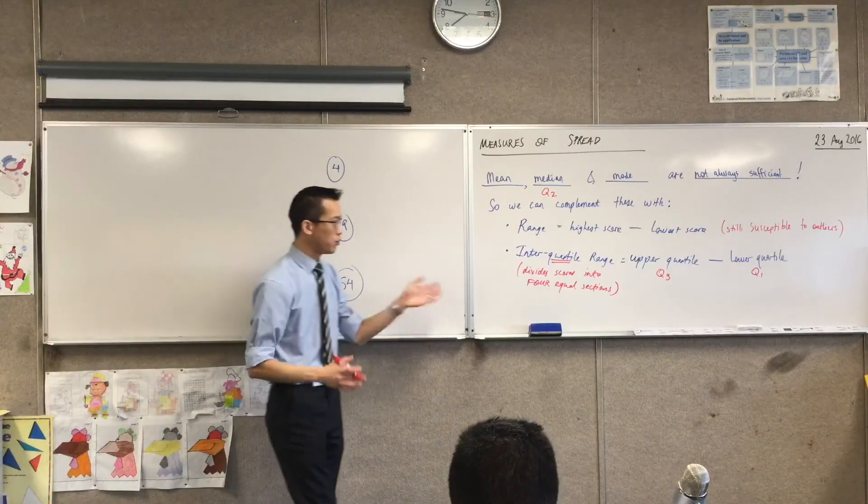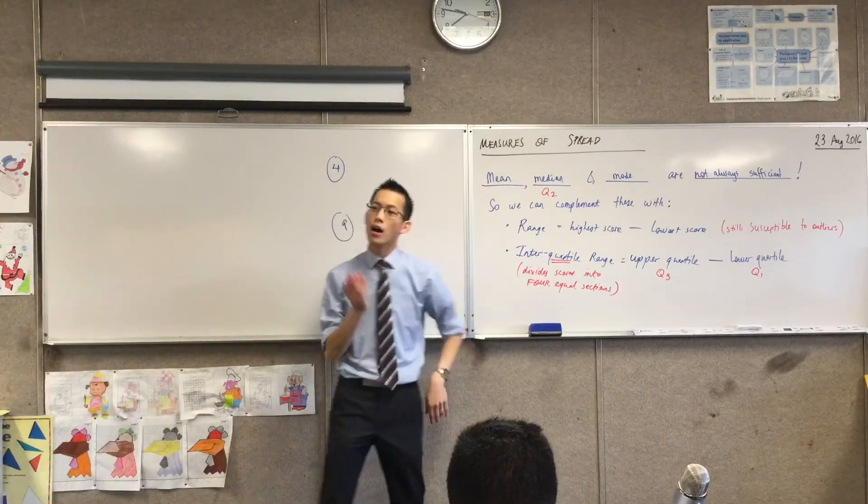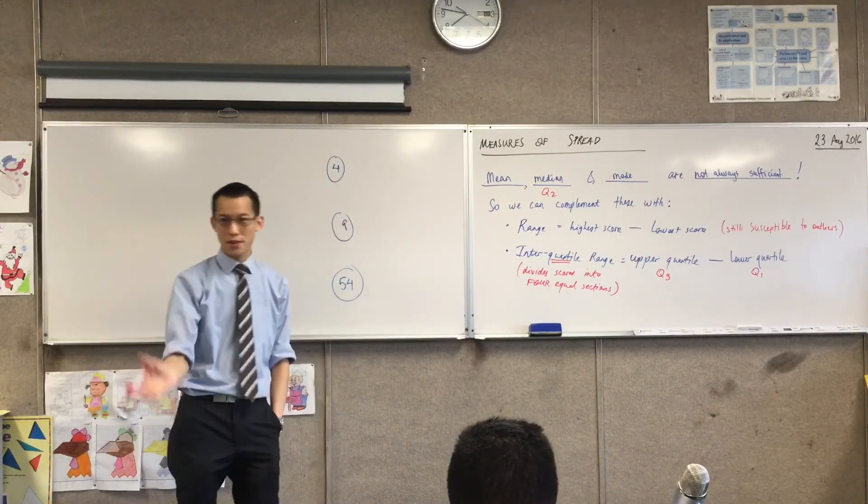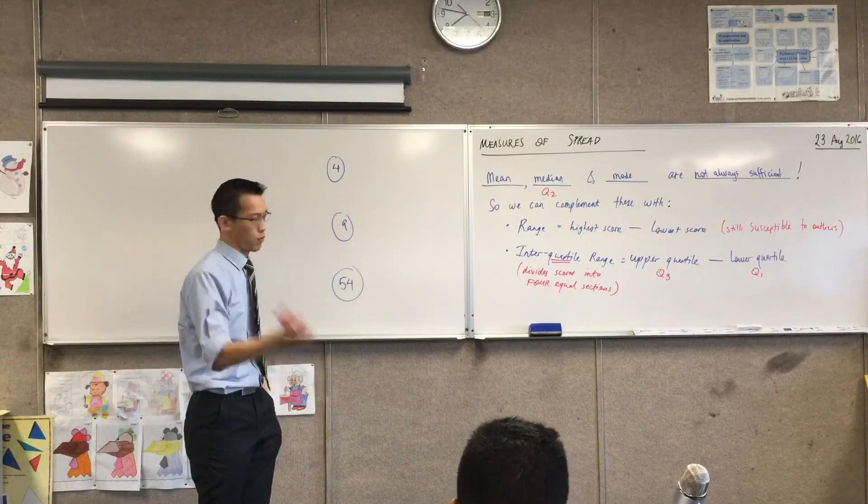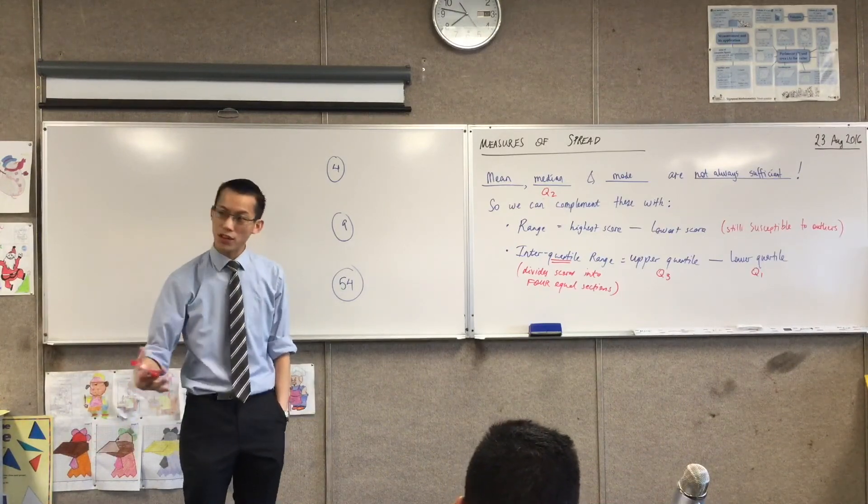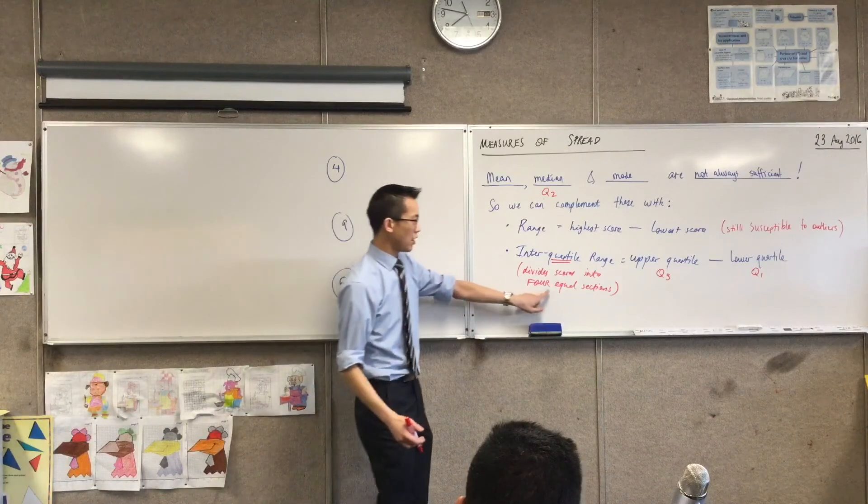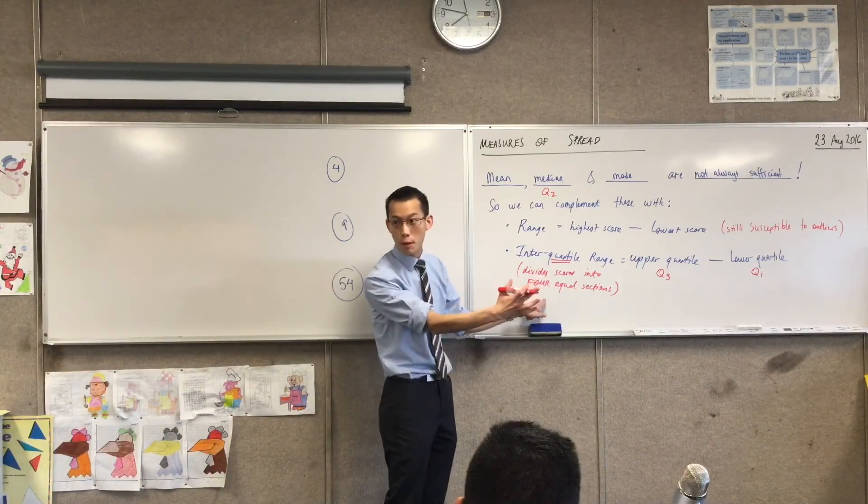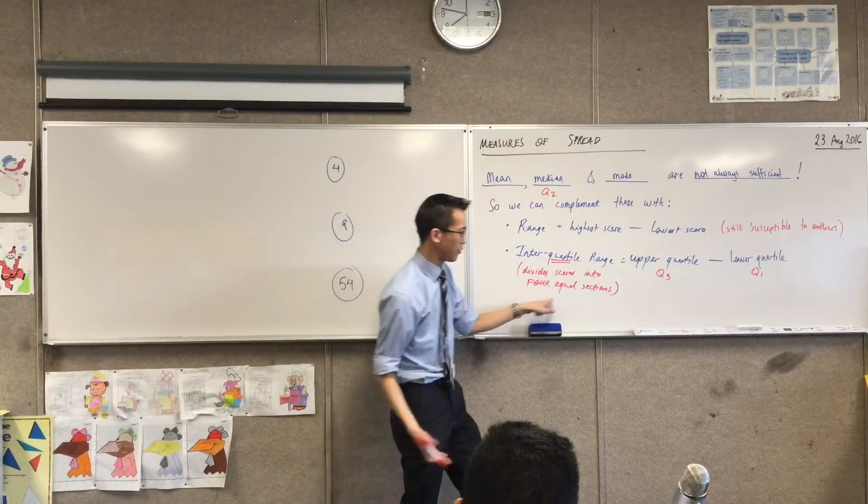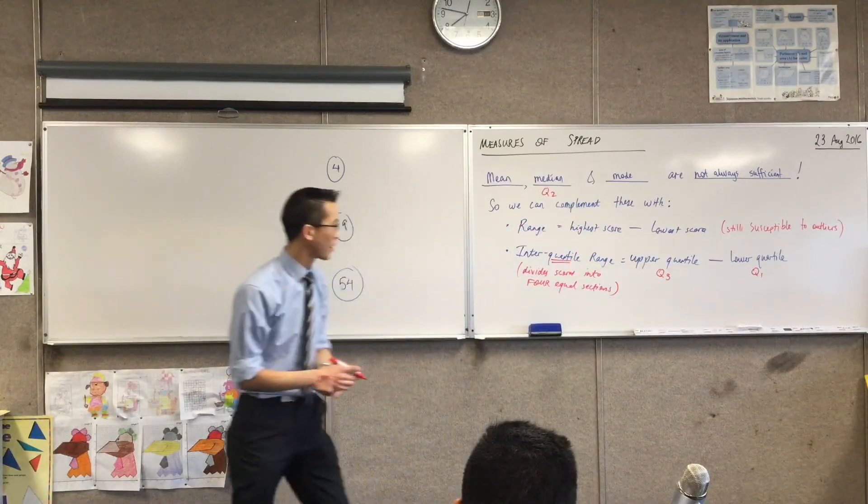So for instance, if you knew what Q1, Q2, and Q3 were, and you're like, oh, my score, whatever, like my height, or my weight, or my income is above Q3, that means you know you're in the top 25% of the population, right? Or alternatively, you could say I'm in the bottom 25% or whatever it might be, okay?